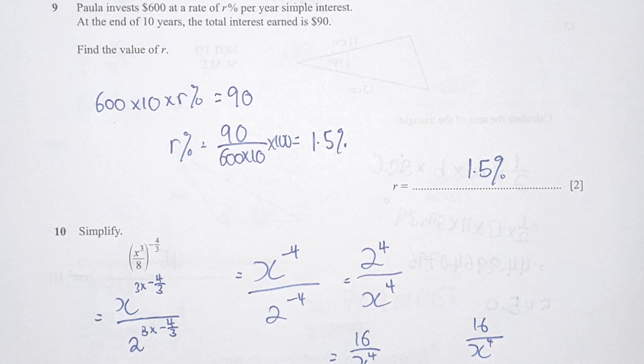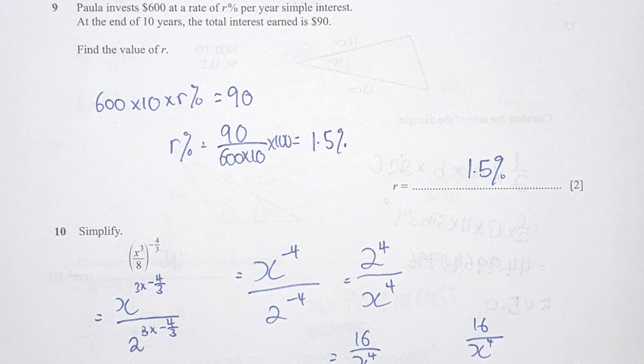As for question 9, things to take note is that this is a simple interest. So the results from the simple interest as stated by the question, it is 90. So 600 times 10, which is 10 years times r percent equals to 90. So after the calculation, you should get your final results as 1.5.